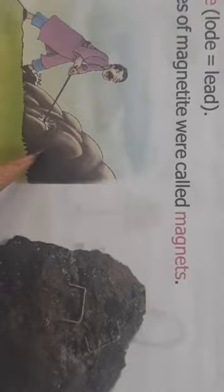As you can see here in the figure, he was wearing very thick boots and they had iron nails on them. He also carried a wooden stick having a metal tip. When he reached a large black rock, he found that he couldn't move as his boots and his staff got stuck to the rock.